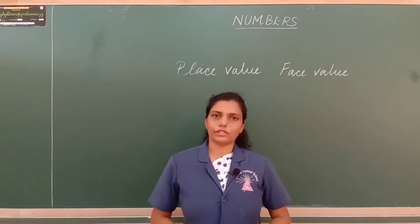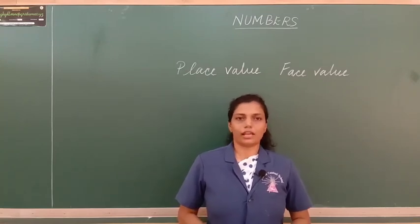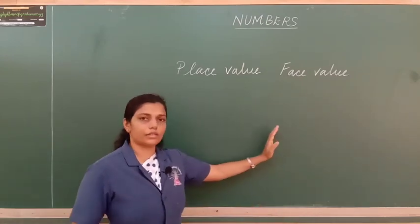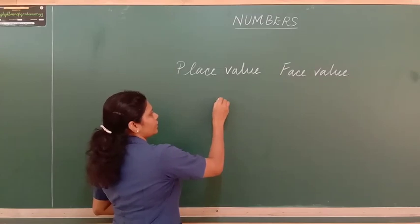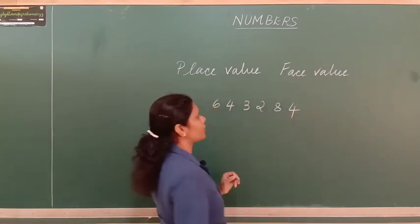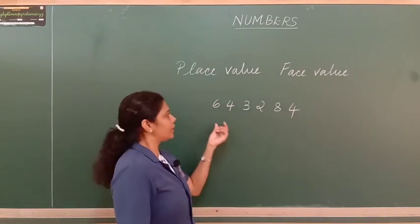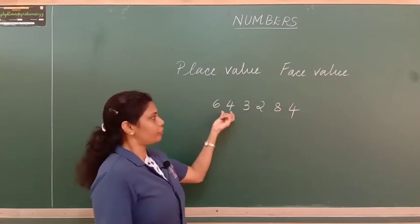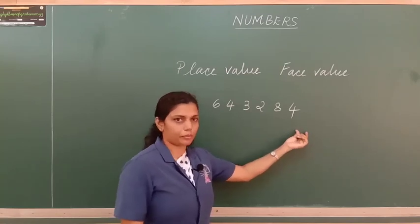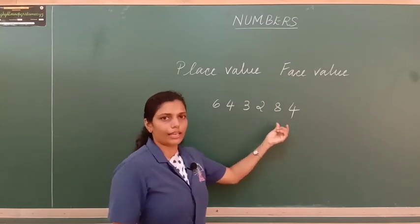Before we start solving the problems, let us understand two important terms: place value and face value. To understand these two terms, let us take an example. I have taken a six digit number — 6,43,284.